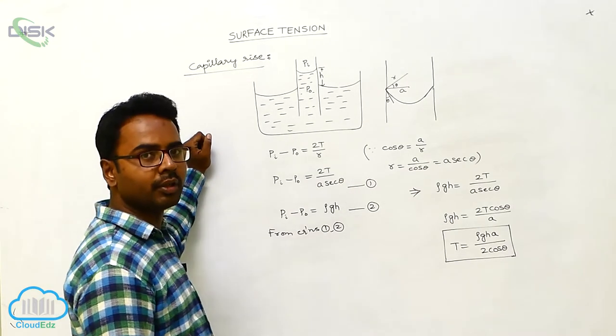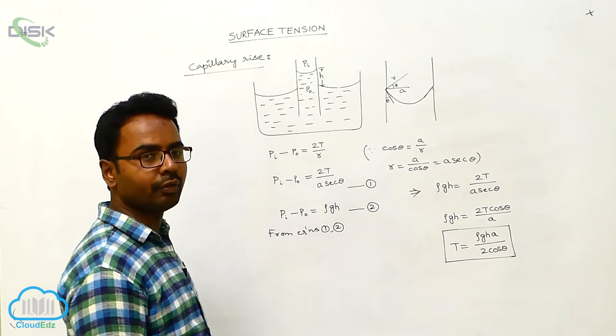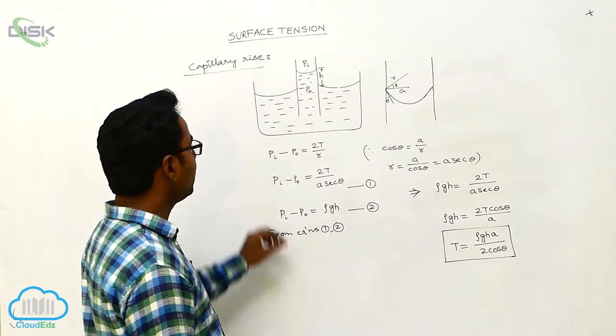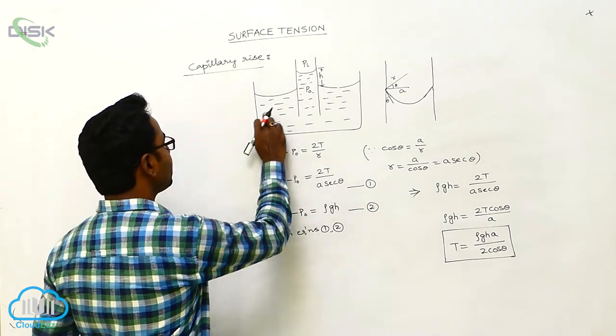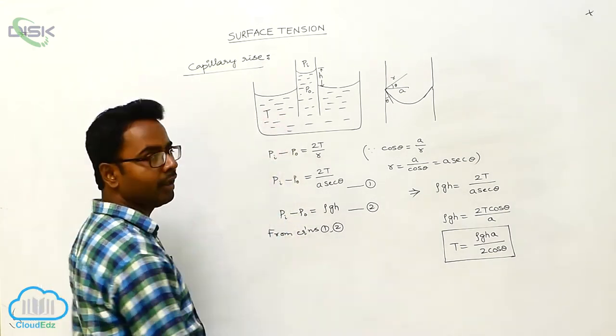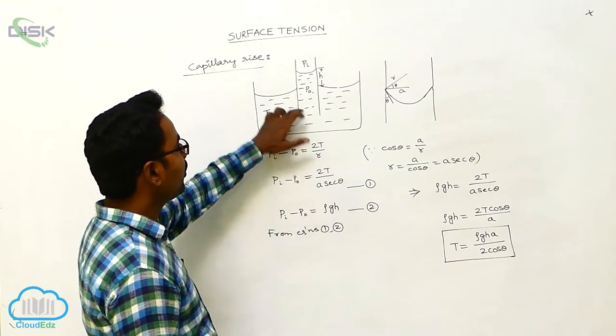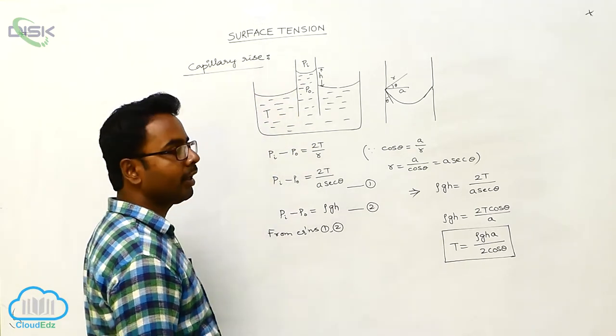Here, using the capillary rise method, we are going to find the surface tension of a given liquid. The liquid whose surface tension is to be measured is taken in a container in which we immerse a capillary tube vertically.